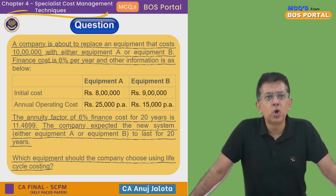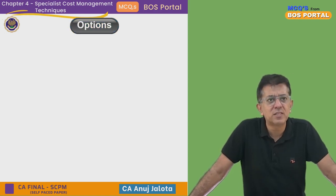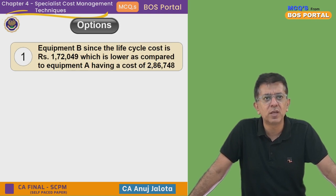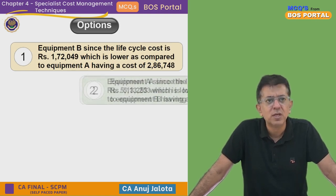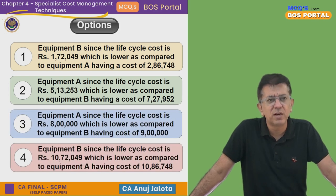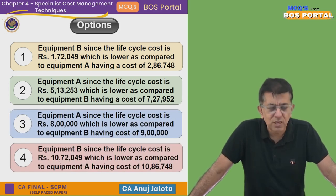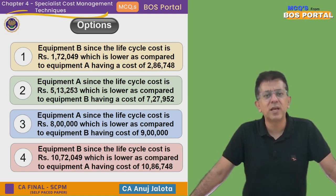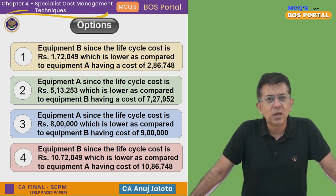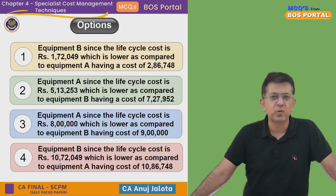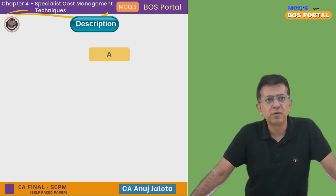There are four options. I won't discuss the options much since this is a practical question — Equipment B has a lifecycle cost lower than Equipment A. Let's compute lifecycle costing for Equipment A and B. Since a discounting factor is given, let's start computing the present value of Equipment A and Equipment B.